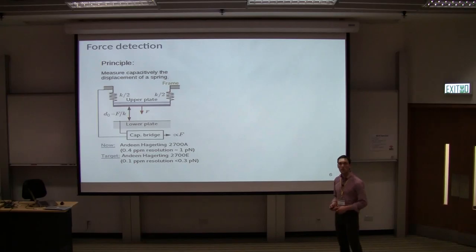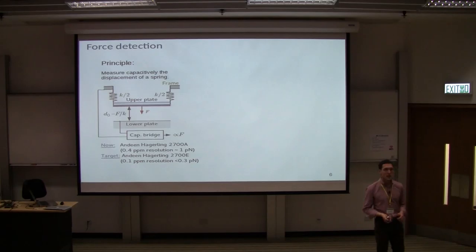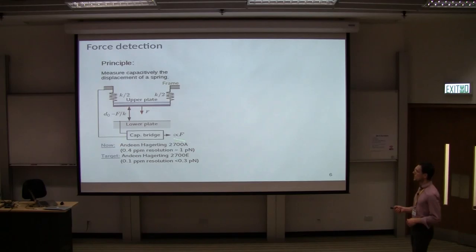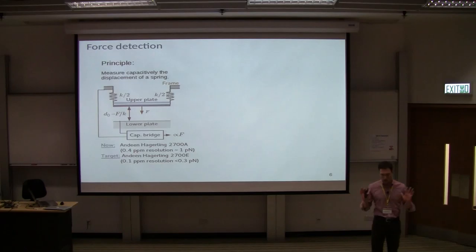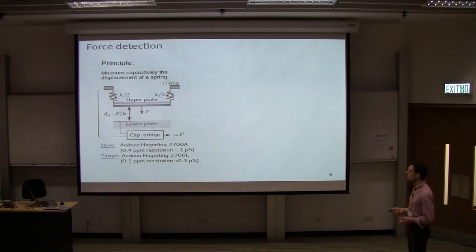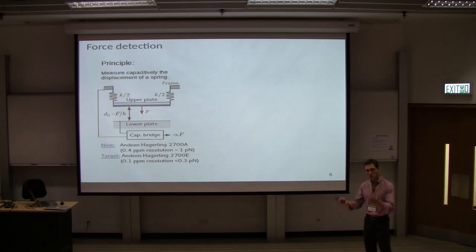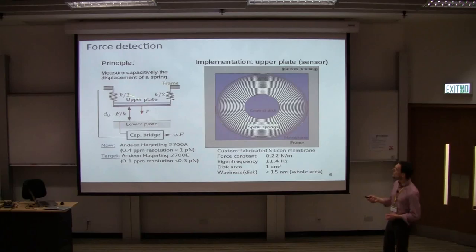And in the core we have the actual measurement. Just to give you an impression of how we should measure. Well, we have two plates, as I said. It's a very simple mass spring system which suspends one of the plates. If you have a force between the plates, you will see a change in the displacement which you can measure capacitively. Currently we measure with a commercial bridge. It's not very accurate. It gives us approximately, in theory, I have to say, the force resolution of one piconewton. We have means of improving that with specific options. And there are also plans to use differential bridges which would increase the sensitivity.